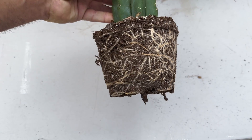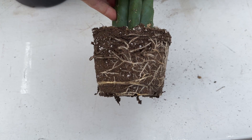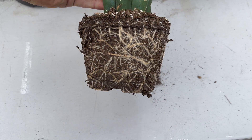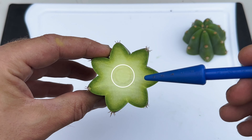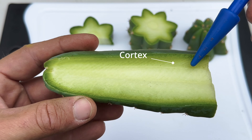Roots are an intricate web of fibers beneath the surface of the cactus, absorbing essential water and nutrients from the soil and fortifying the cactus against the harsh environment. The vascular bundle can be seen in the center of a columnar stem — these intricate pathways facilitate the transport of essential fluids and nutrients, ensuring the cactus's survival.